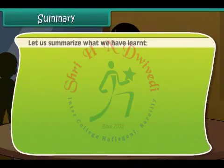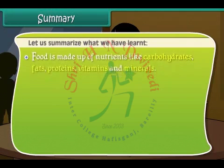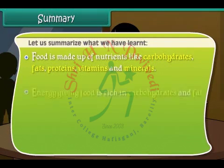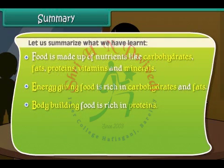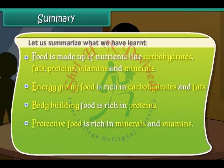Let us summarize what we have learned. Food is made up of nutrients like carbohydrates, fats, proteins, vitamins and minerals. Energy giving food is rich in carbohydrates and fats. Body building food is rich in proteins. Protective food is rich in minerals and vitamins. Plants make their food in their leaves.